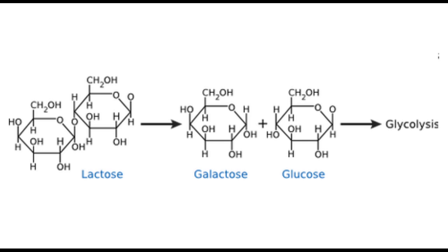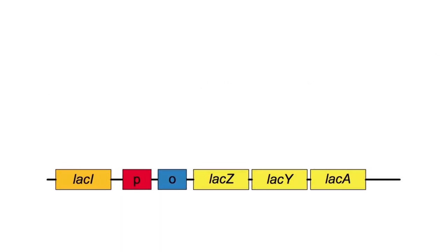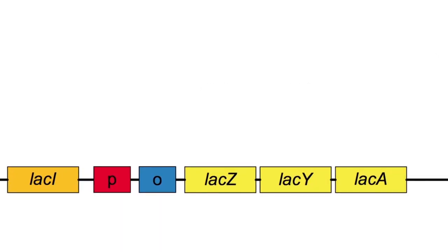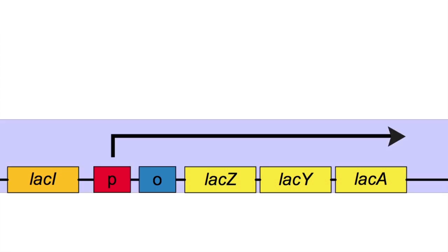In this video, we will examine the regulation of the lactose operon in Escherichia coli. An operon is a collection of genes that perform some function for the cell that can be transcribed together, but are always under the same regulatory circuit. The lactose catabolism genes form an operon and, understandably enough, it is called the lac operon.